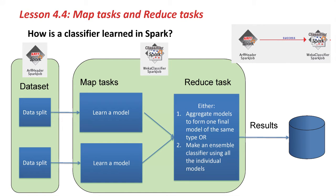Here is a slide that attempts to describe how the processing occurs in Spark for our classifier job. On the left-hand side, we have the ARF header Spark job, which initially loads the data into main memory for us. It loads the CSV data and creates one of Spark's resilient distributed datasets with a number of splits, or partitions as they're called in Spark. Each partition is processed by a worker out on the cluster, or in our case by a CPU core on our desktop machine. The map tasks process these partitions and create partial models.